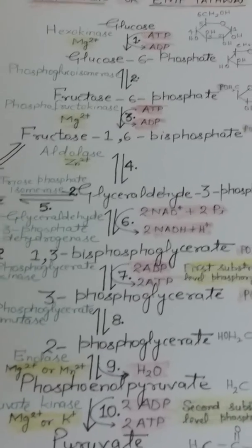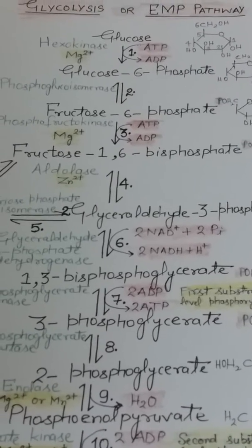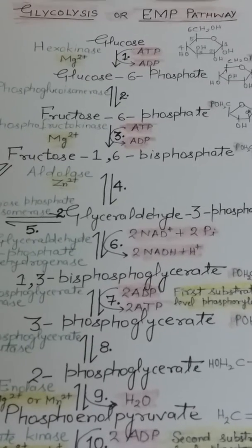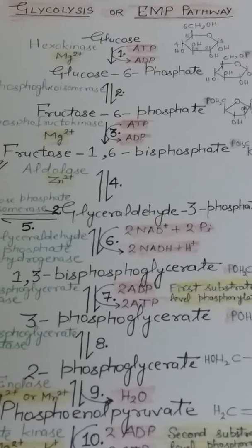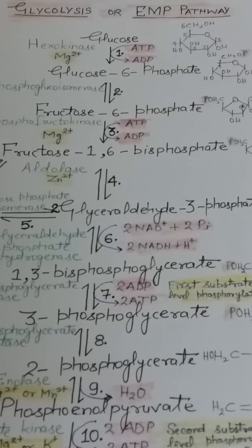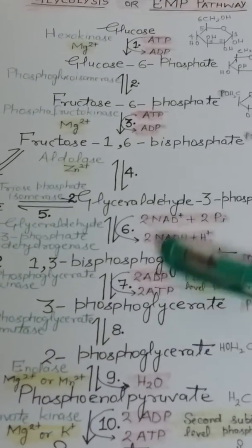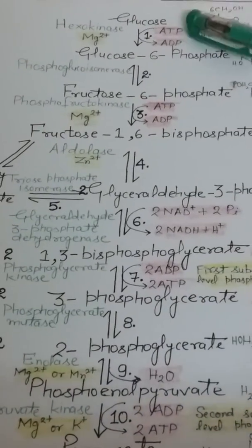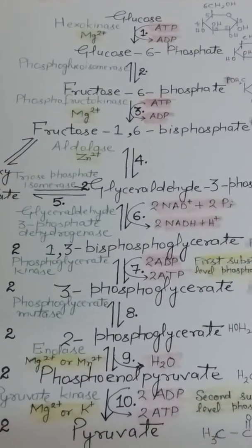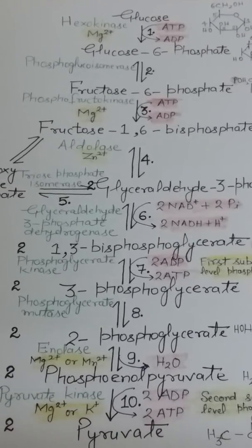This process is also called the EMP pathway. EMP stands for Embden–Meyerhof–Parnas pathway, named after Embden, Meyerhof, and Parnas who described the scheme of glycolysis. In glycolysis, we will cover all 10 steps required to convert glucose to pyruvate. The first half of glycolysis requires energy investment.